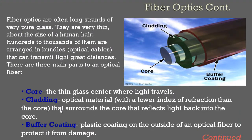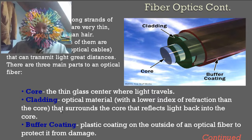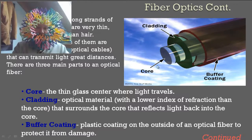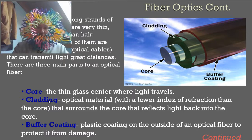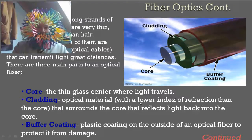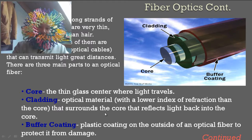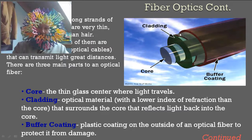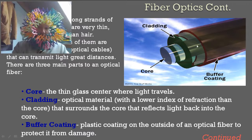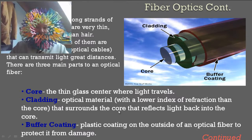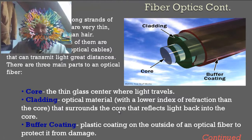Fiber optics are often long strands of very pure glass. They are very thin, about the size of a human hair. Hundreds of thousands of them are arranged in bundles or optical cables. There are three main parts of an optical fiber. First, you have the core, the thin glass center where light travels. You have the cladding, which is optical material with a lower index of refraction than the core that surrounds the core and reflects light back into the core. Then you have this buffer coating, a plastic coating on the outside of an optical fiber to protect it from damage, because glass is kind of brittle.